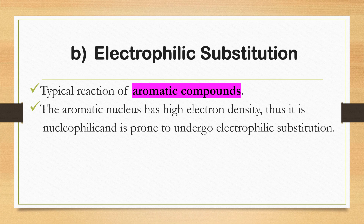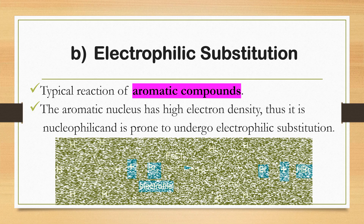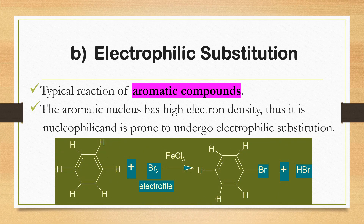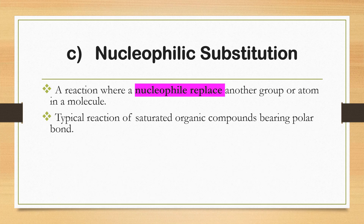For electrophilic substitution, this is the typical reaction of aromatic compounds. The aromatic nucleus has high electron density, making it prone to undergo electrophilic substitution. As seen in the bromination of a benzene ring, bromine acts as the electrophile and substitutes one of the hydrogen atoms of the benzene ring.